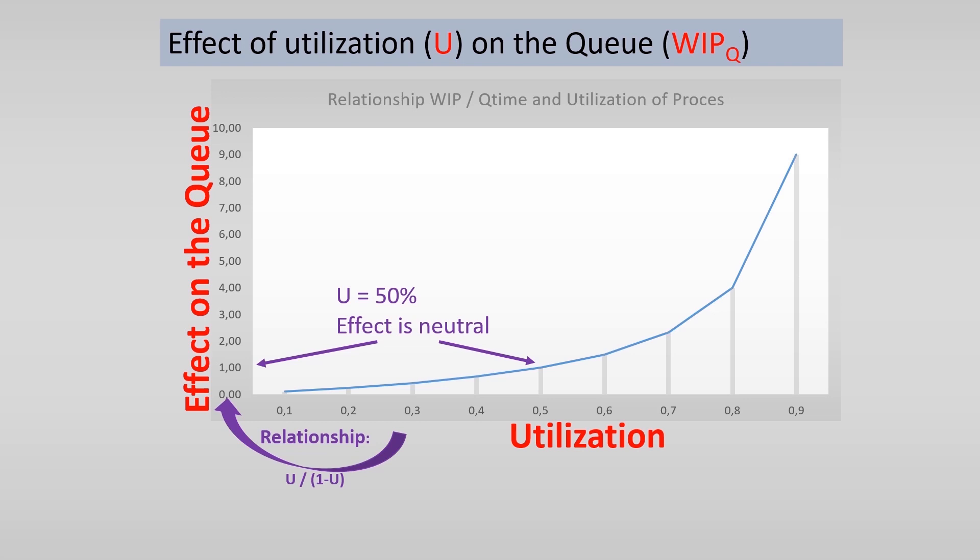If the utilization rises, the length of the queue will be longer and longer and longer. Suppose you have a planned utilization of 90%. The queue will be 9 times as large as expected.